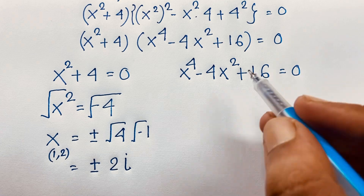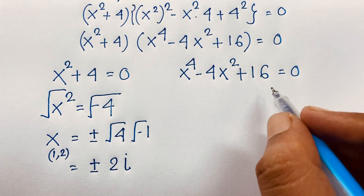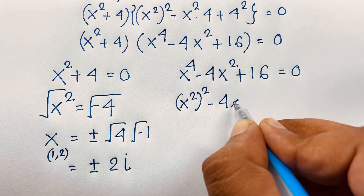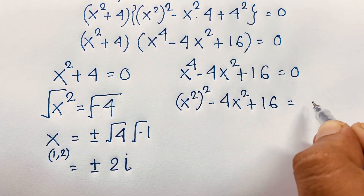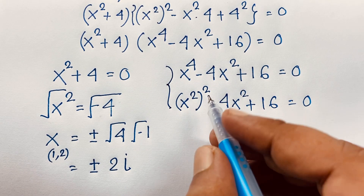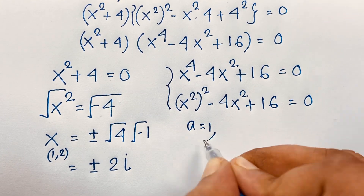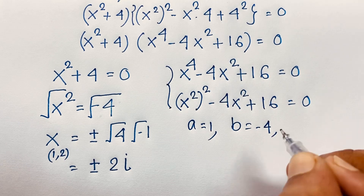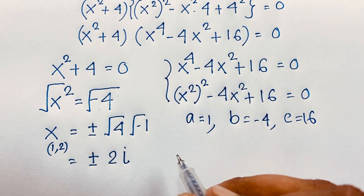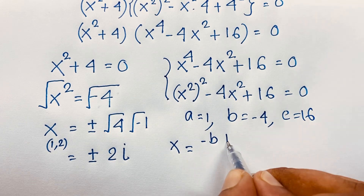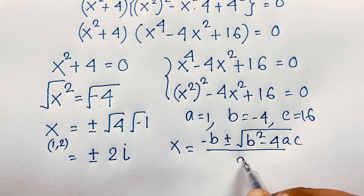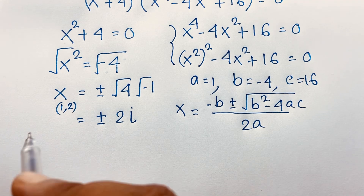So we'll need the other solutions. The second case is x to the power 4 minus 4x squared plus 16 is equal to 0. It will be x squared, bracket to the power 2, minus 4x squared plus 16 equals 0. In this exponential expression, you can see that it is a quadratic equation. Here a is equal to 1, b is equal to negative 4, and c is equal to 16.